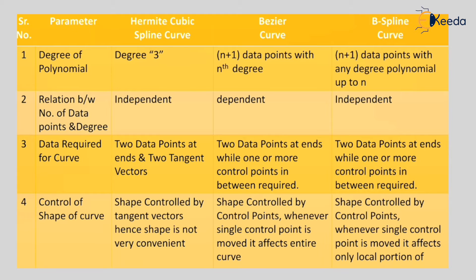First is degree of polynomial. In Hermite cubic curve or cubic spline curve, it is always represented by a polynomial of degree 3, while in Bezier curve with n plus 1 data points it is represented by a polynomial of nth degree. In B-spline curve with n plus 1 data points, it is represented by a polynomial of up to nth degree.